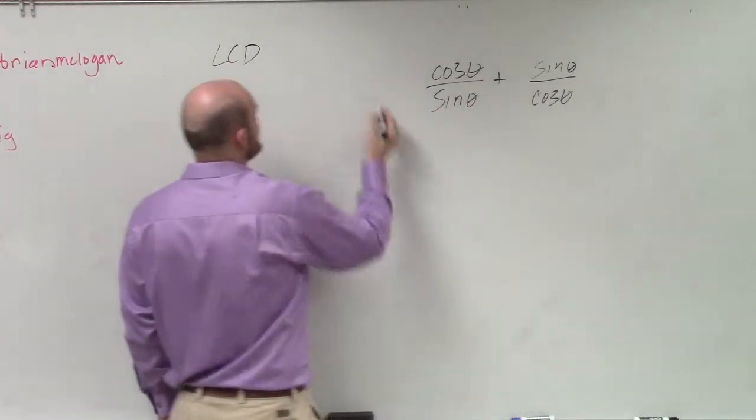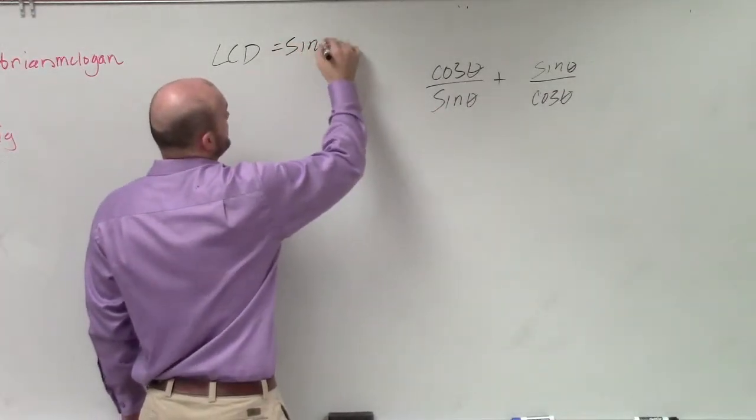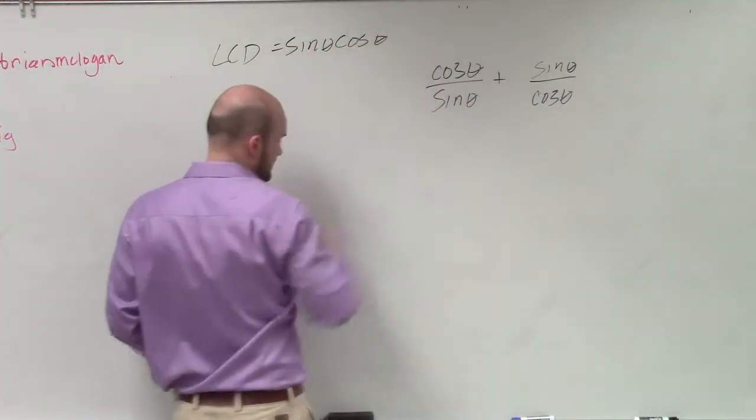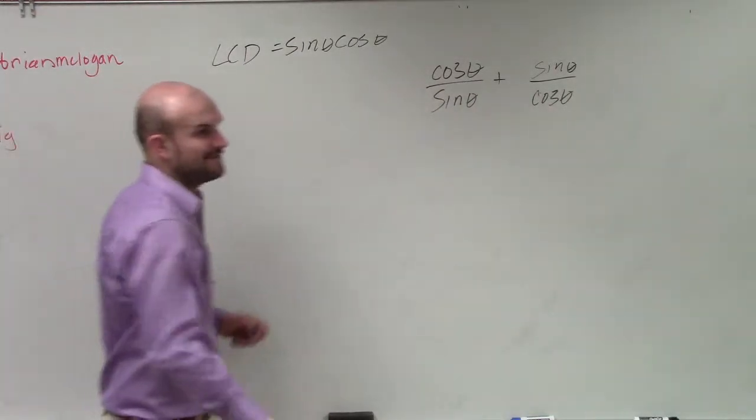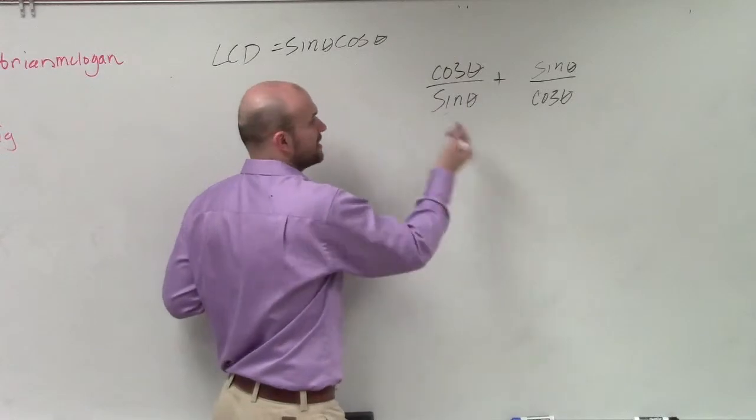Well, if we have sine and cosine, my LCD is just going to be sine of theta times cosine of theta. So just like we would do with fractions, we're going to have to multiply by the other to get our common denominator.